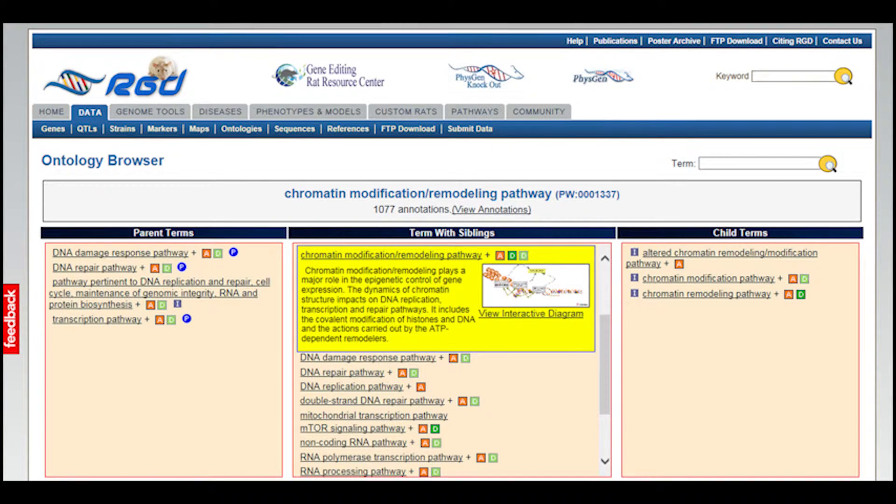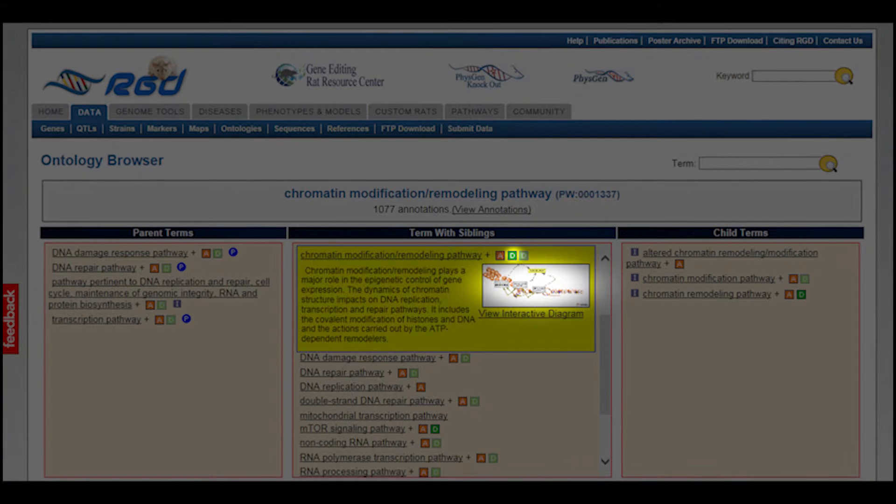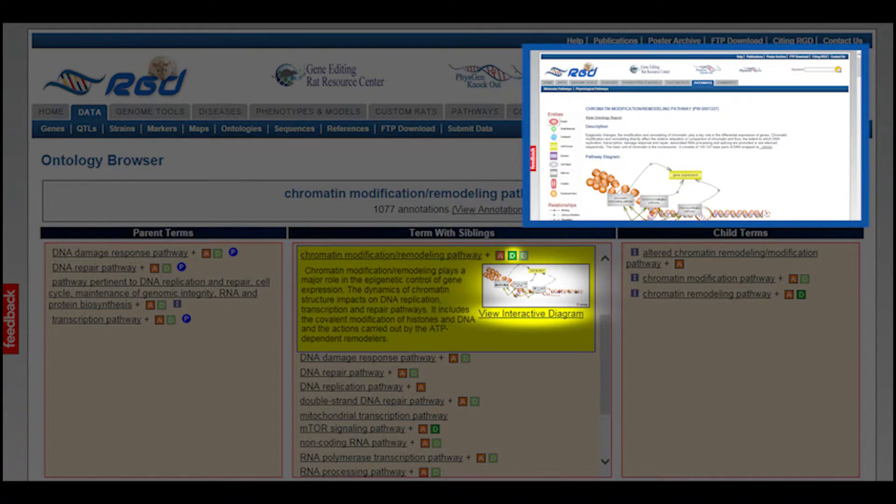Notice that because the selected term has a diagram, in addition to the icons mentioned previously, there is a thumbnail of the diagram. This thumbnail, the dark green D icon, and the link that says view interactive diagram all link to the diagram page.